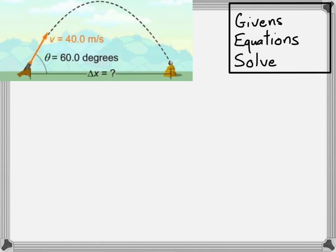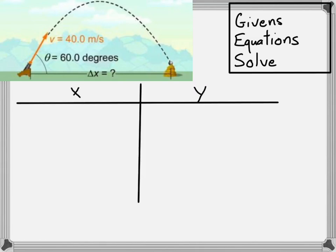So the same process as in the previous video. Let's get started with figuring out the givens. We'll create a chart with x on one side and y on the other, because we can treat these as two independent motions.